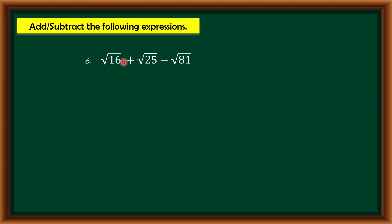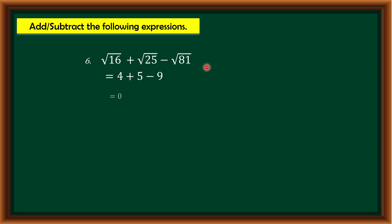Number six: √16 + √25 - √81. Here we have dissimilar radicals, but each expression is a perfect square, so we just get their roots. √16 = 4, √25 = 5, and √81 = 9. Then we add and subtract: 4 + 5 - 9 = 0. That is our final answer.